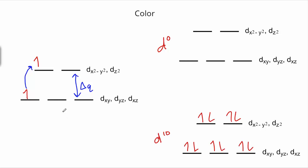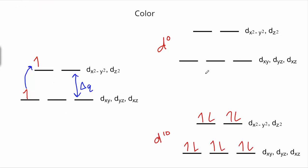Now, the color absorbed is not actually equal to the color you perceive with your eye. Typically, if the complex absorbs one color, we observe the complementary color on the other side of the color wheel. This ultimately gives us two cases where we don't expect transition metal complexes to be colored — they might be colored for other reasons, but not for this reason.